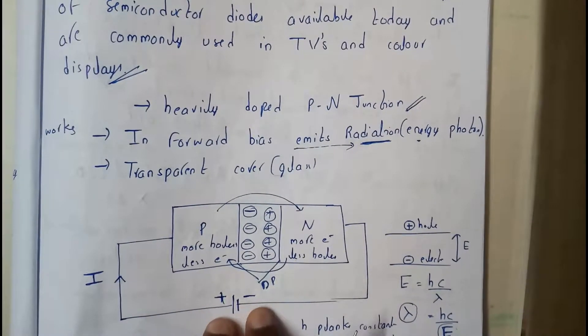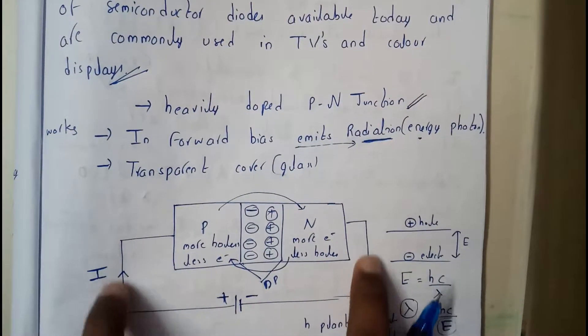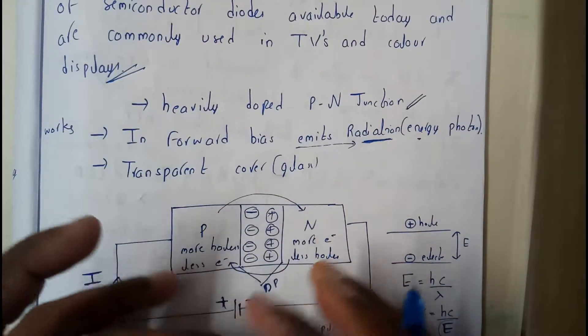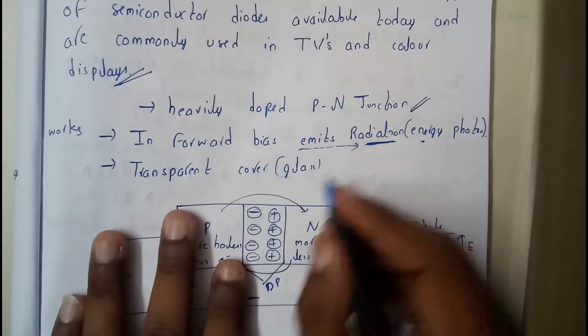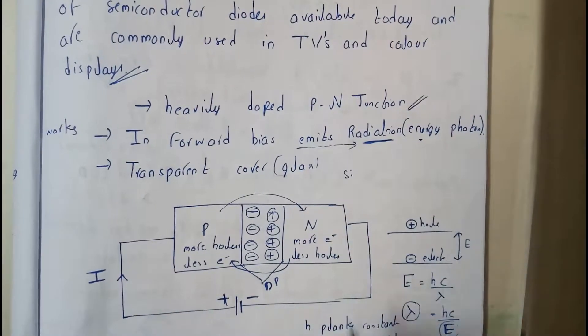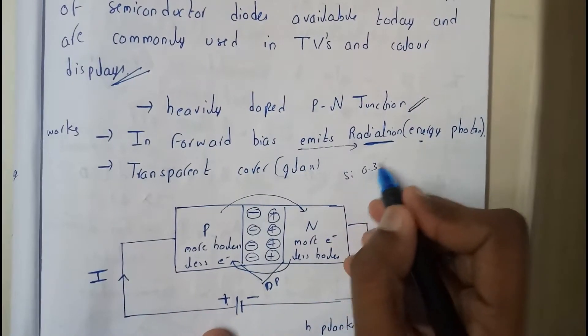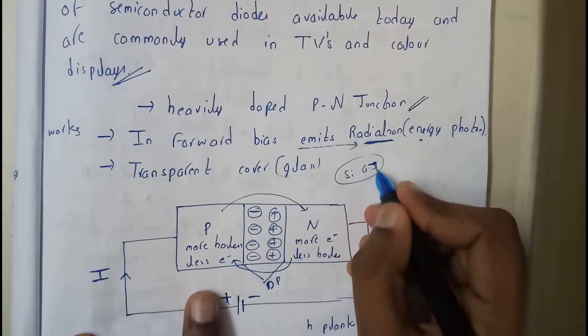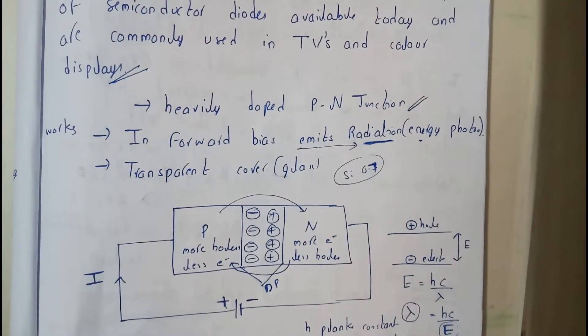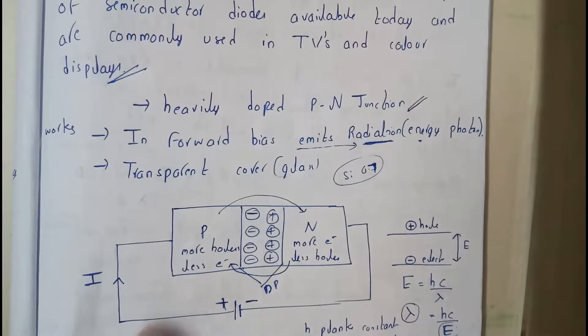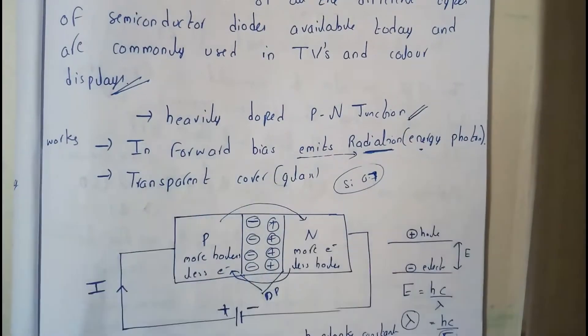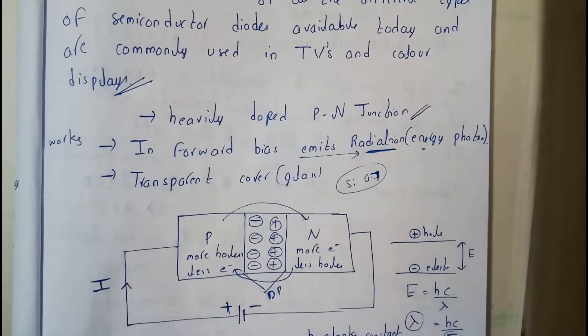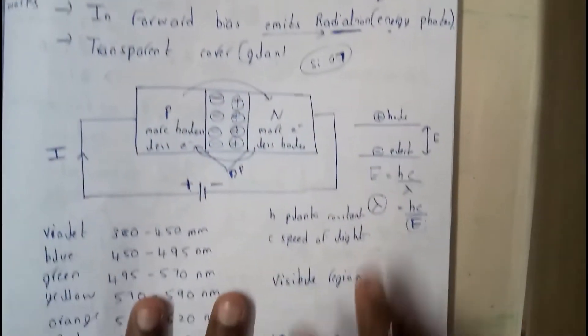As you increase the power supply for this, if I keep on increasing the power supply, if I assume this as silicon, I'll be increasing up to more than 0.3 so that it's going to break it. For silicon it is 0.7 - sorry, so up to 0.7 it's going to withstand and after 0.7 this depletion region is going to be vanished.